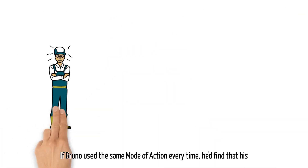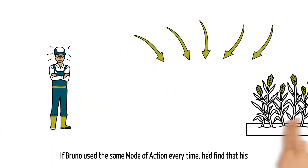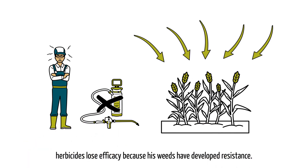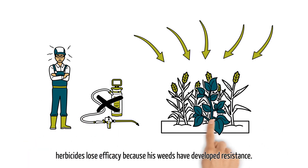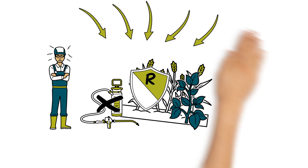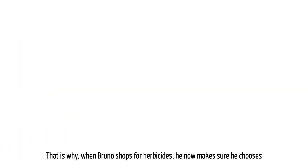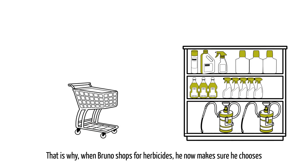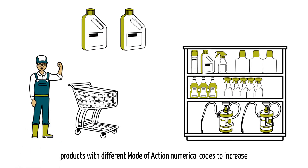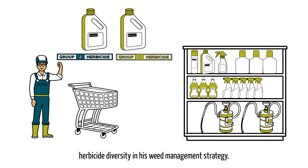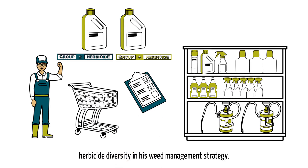If Bruno were to use the same mode of action every time, he would find that his herbicides lose their efficacy because his weeds have developed resistance. That is why, when Bruno shops for herbicides, he now makes sure he chooses products with different mode of action numerical codes to increase herbicide diversity in his weed management strategy.